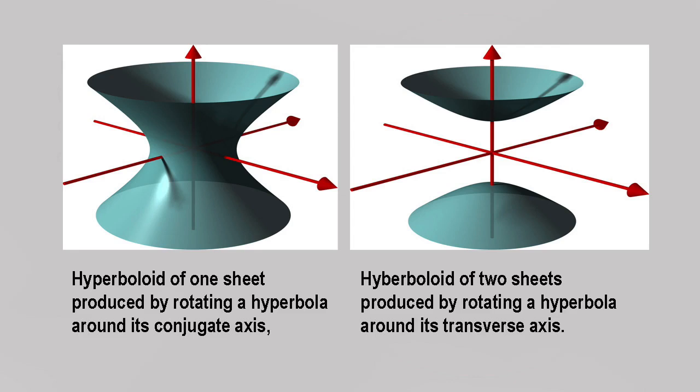The hyperboloid of one sheet first described by Archimedes has some particularly remarkable properties. In 1669, Christopher Wren, the architect who designed Saint Paul's Cathedral in London, showed that this kind of hyperboloid is what mathematicians now call a ruled surface, a surface composed of infinitely many straight lines.